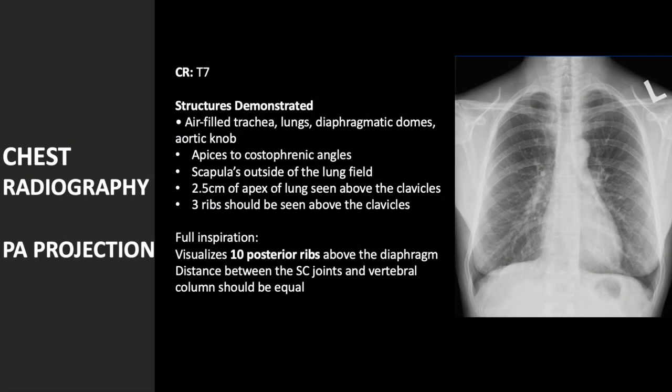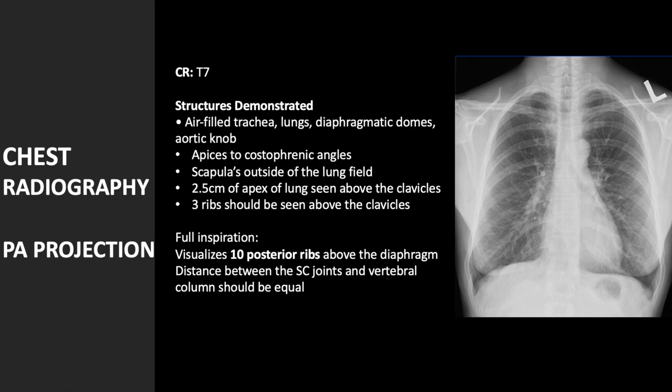The finished radiograph should demonstrate an air-filled trachea, lungs, diaphragmatic domes, aortic arch, apices to costophrenic angles, scapulae outside of the lung field, and 2.5 cm of the apex of the lung seen above the clavicles. Three ribs should be seen above the clavicles.